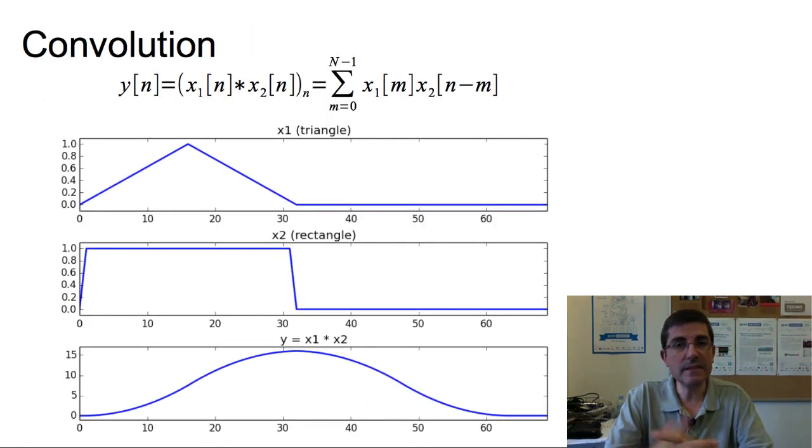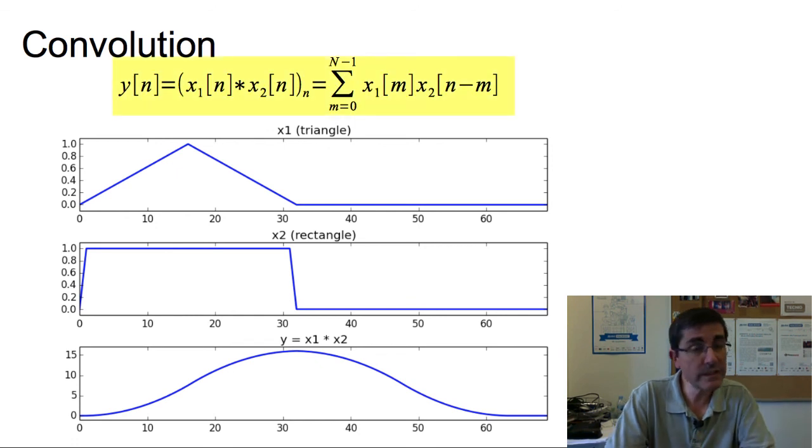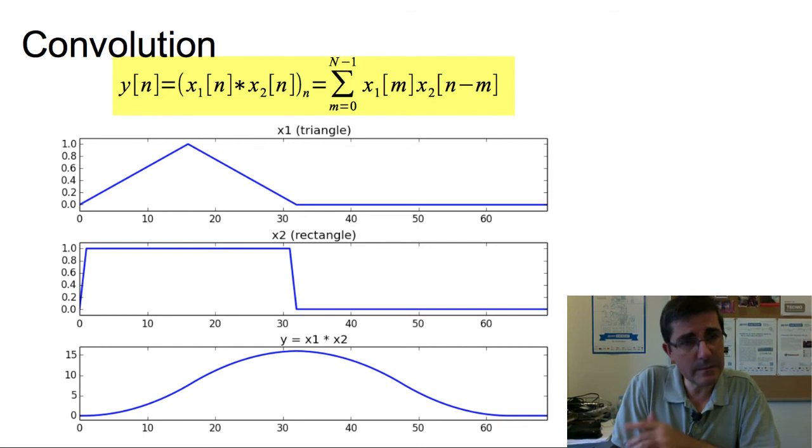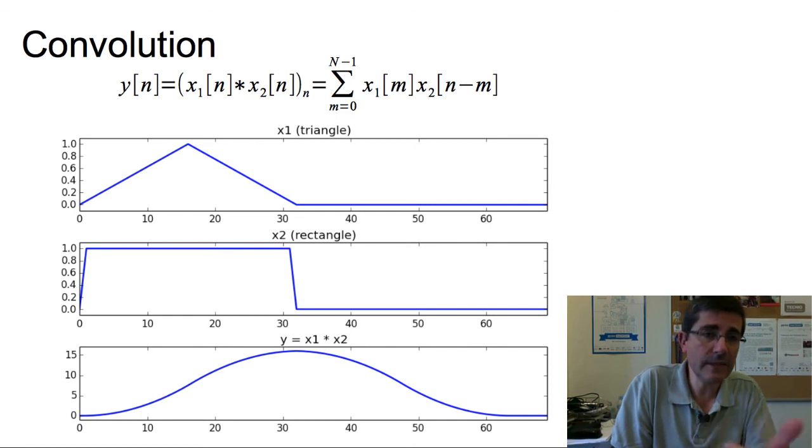The last concept I want to mention is the one of convolution of sequences. This is a mathematical operation of two sequences, producing a third sequence that can be viewed as a modified version of one of the original sequences. Here we see the equation of convolution. I don't have time to go into detail, but please try to understand it. And also we can see it graphically.